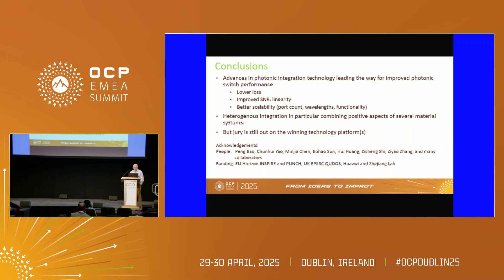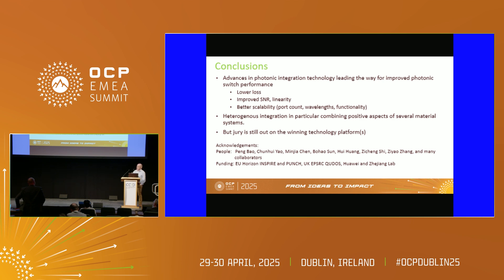To conclude: photonic integration technology is advancing all the time - we're getting lower loss, improved signal-to-noise ratio, and better scalability as a result - greater port count, wavelength, and functionality. Heterogeneous integration in particular is allowing us to combine the positive aspects of Indium Phosphide, the gain, with the positive aspects of silicon photonics, which are compactness and maturity. But which particular way of doing it - the jury is still out. Thank you.